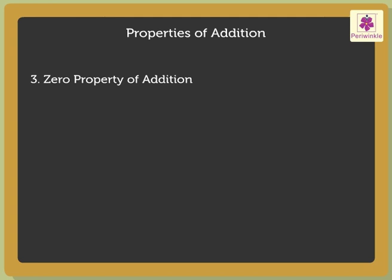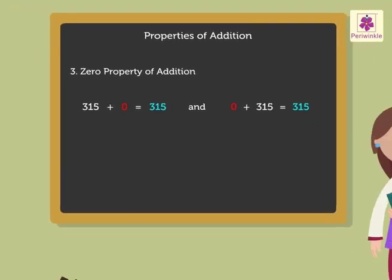Zero property of addition. Let us take the numbers 315 and 0. If we add 315 to 0, we get the sum 315. And even if we add 0 to 315, we get the sum 315. This tells us that when 0 is one of the two addends, then the sum is equal to the non-zero addend.